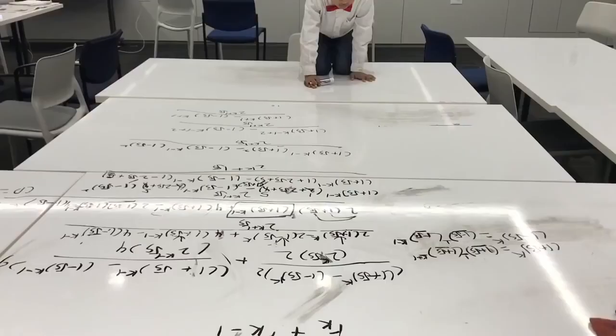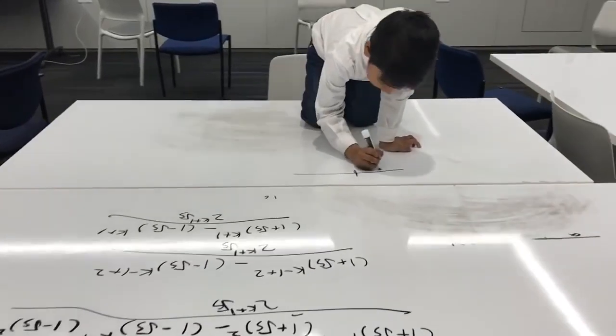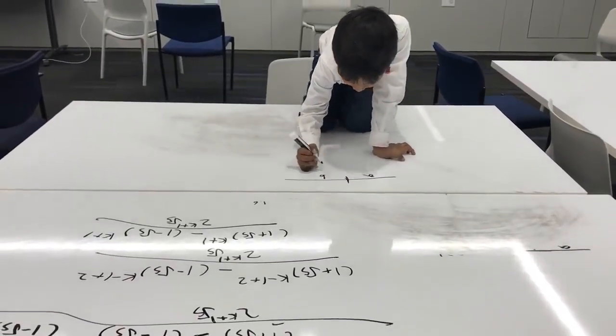The golden ratio. Imagine there's a line in front of you. So this side is A, and this side is B.